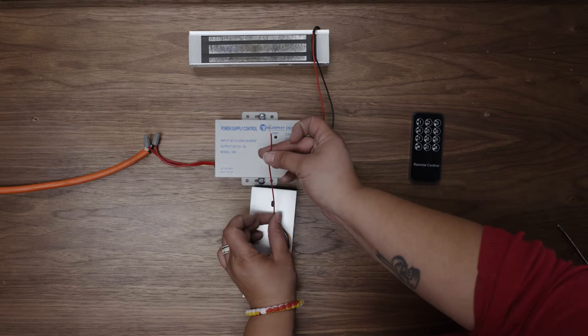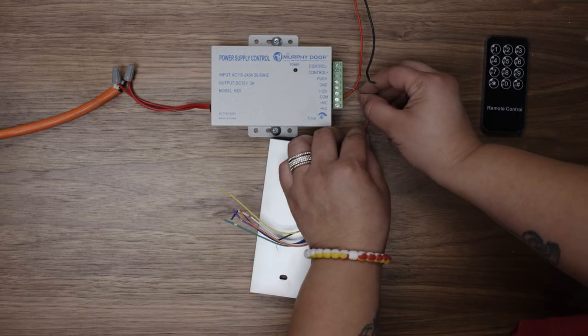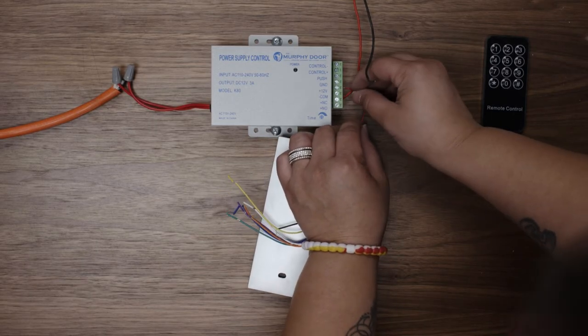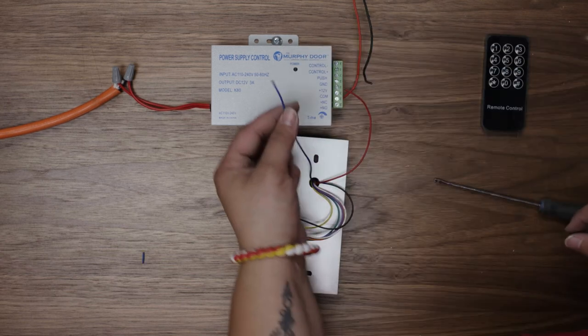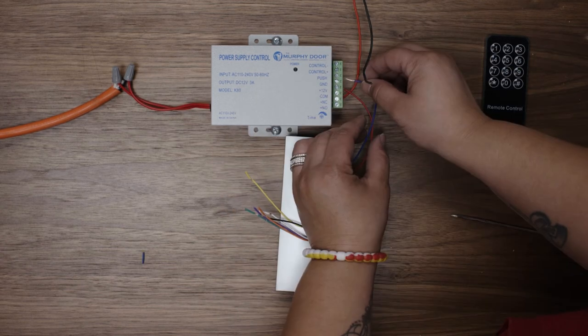Now connect the red wire from the fingerprint scanner to the 12 volt terminal on the power supply. The blue wire connects to the push terminal.